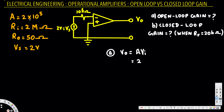The open loop gain A is given as 2 times 10 to the power of 5. R_i is the input resistance between the inverting and non-inverting terminals, and the voltage source is given as 2 volts. So A is 2×10⁵ and the input voltage is 2 volts.